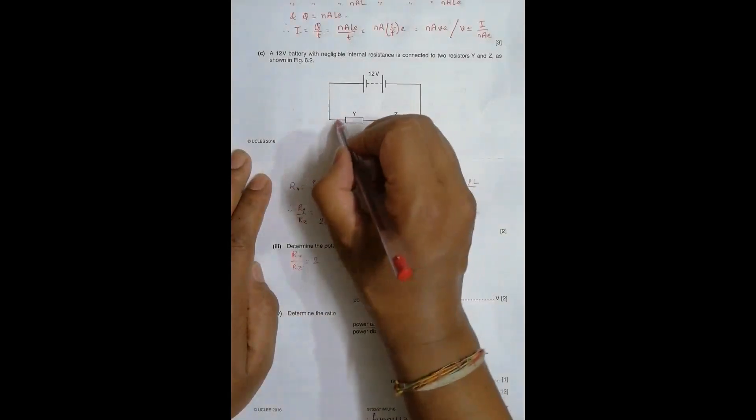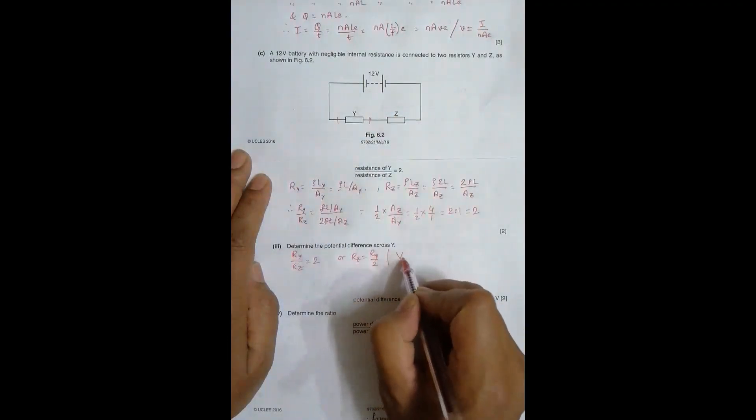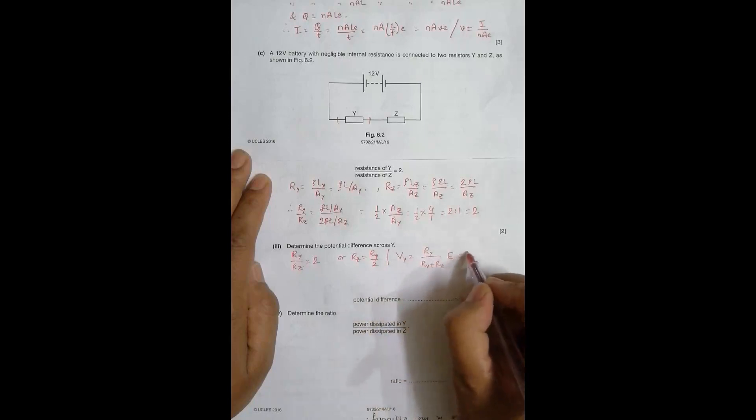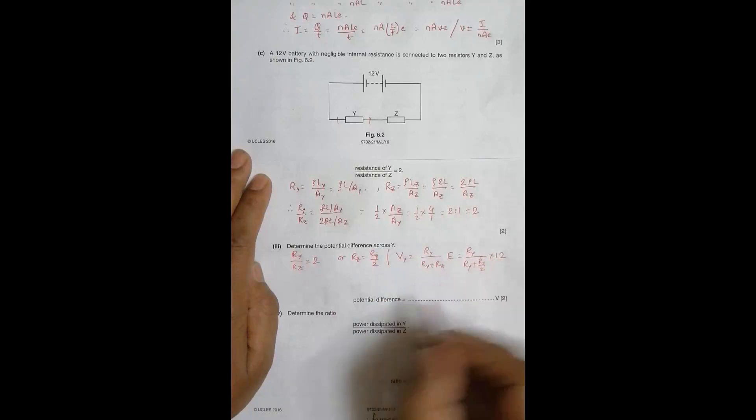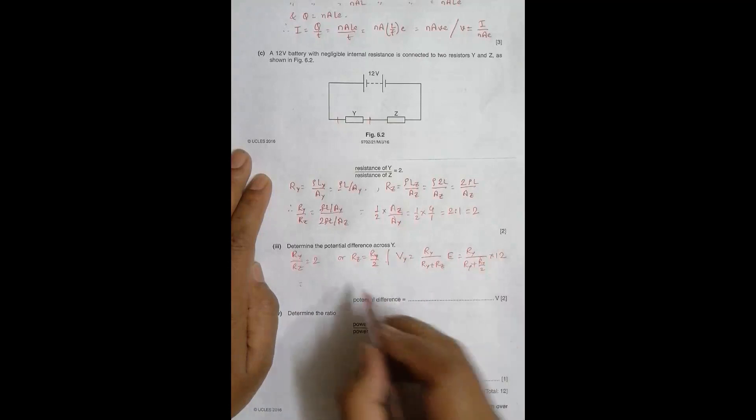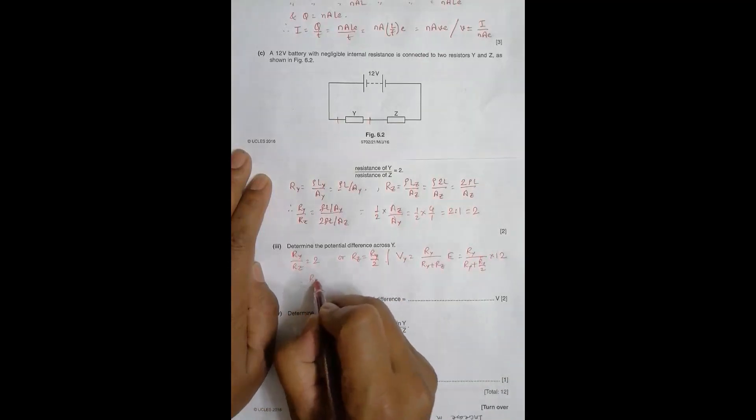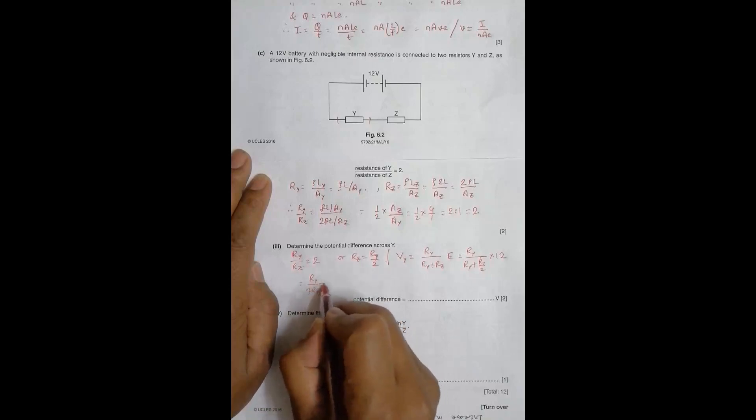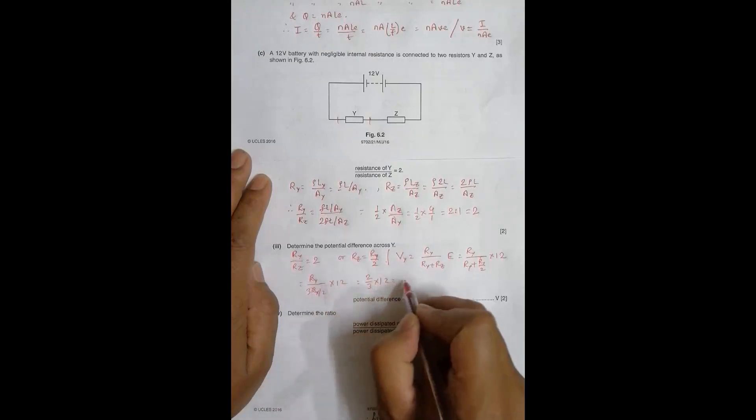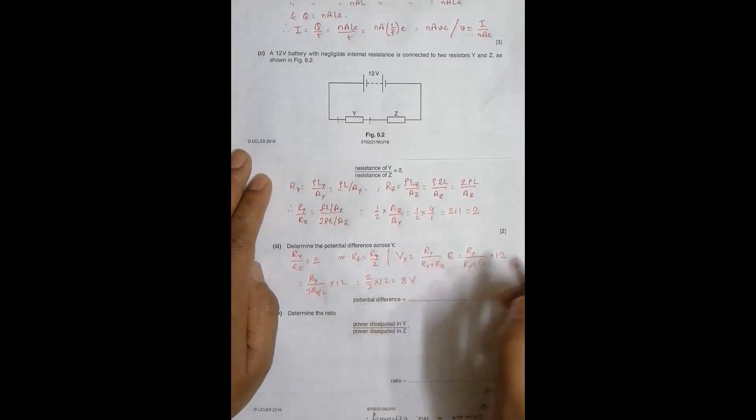Now, the PD across Y should be equal to, so I have to find the PD here. So the PD V_Y should be equal to, we can use the voltage divider formula here. So it is R_Y divided by R_Y plus R_Z and then it is E. That's equal to R_Y plus R_Z is equal to R_Y by 2 and then it's equal to 12. So this will be equal to, so when we take LCM, it is 3 R_Y by 2. So it should be R_Y by 3 R_Y by 2 into 12. So R_Y, R_Y cancel, 2 goes up. So 2 by 3 into 12 equal to it is 8 volt. So its value should be equal to 8 volt here.